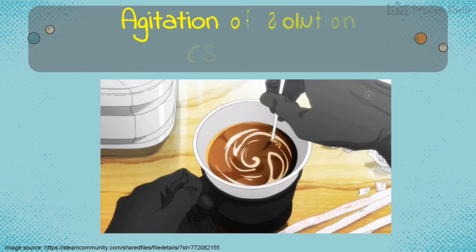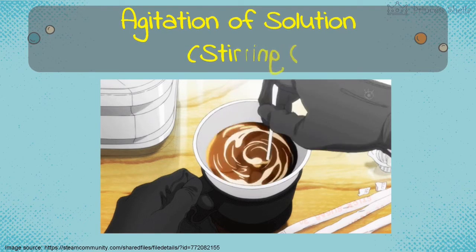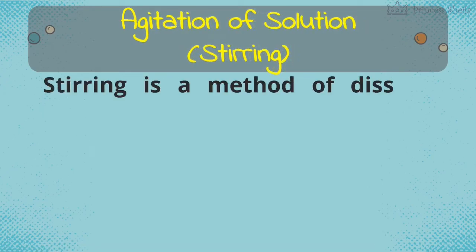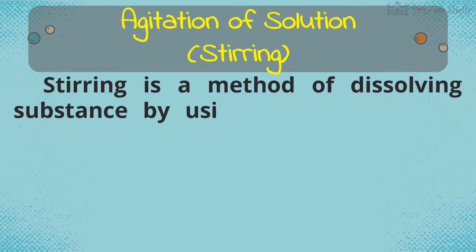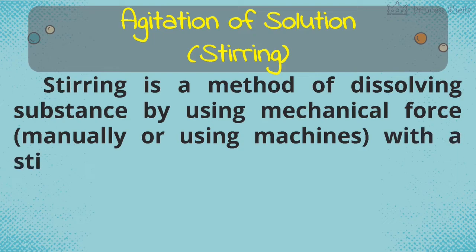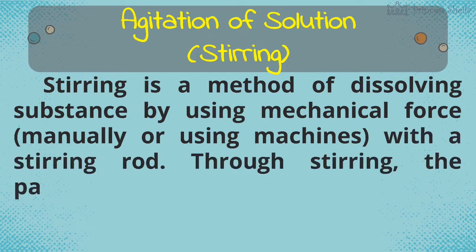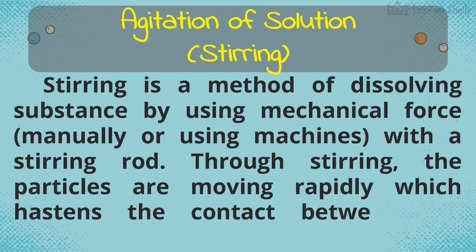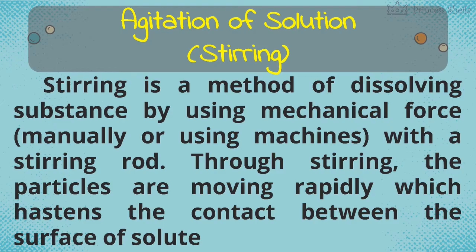The second factor is agitation of the solution. Stirring is a method of dissolving a substance by using mechanical force — either manually or using machines with a stirring rod. Through stirring, the particles move rapidly, which hastens the contact between the surface of the solute and solvent particles.